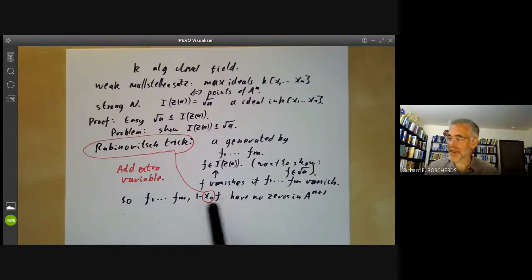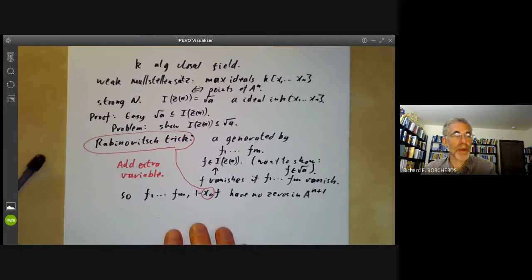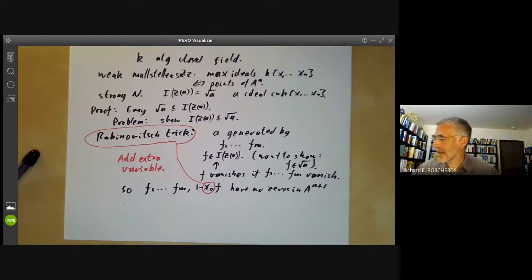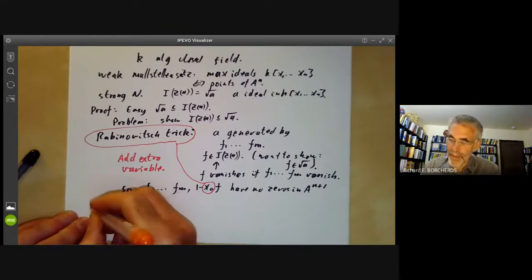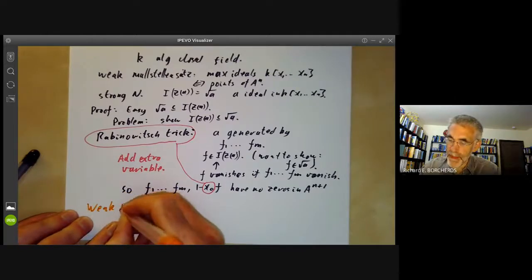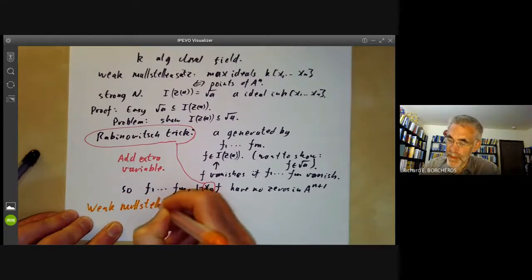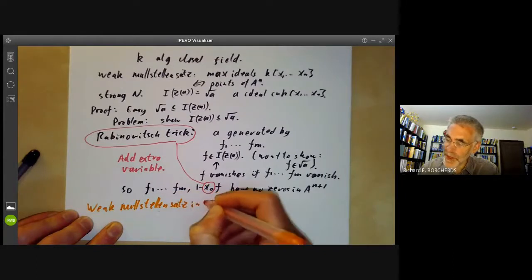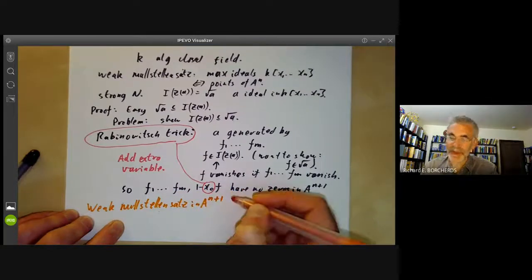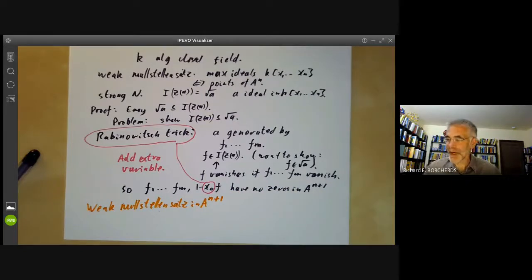That's kind of obvious because any common zero would have to be a zero of f1 up to fm. So it would also have to be a zero of f, in which case this wouldn't vanish. So they have no common zeros. Now we apply the weak Nullstellensatz